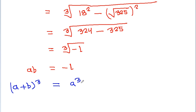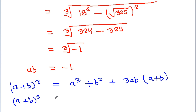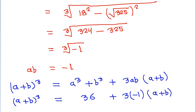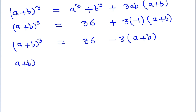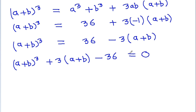And (A+B) whole cube is equal to A cubed plus B cubed plus 3AB times (A+B). So (A+B) whole cube will be equal to A cubed plus B cubed, which is 36, plus 3 times AB, which is minus 1, times (A+B). And (A+B) whole cube will be equal to 36 minus 3 times (A+B).